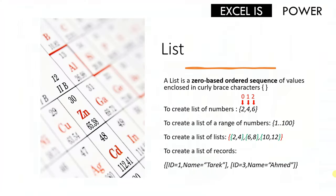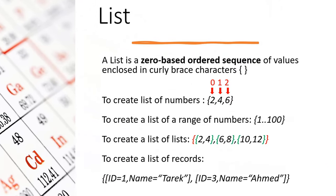So what is a list? A list is a zero-based ordered sequence of values enclosed in curly brackets. This means that if you want to form or create a list, you need to use curly braces. It is zero-based, meaning that if you look at the first example — a list of three numbers: two, four, and six — the position of the first number (two) is zero, not one. The position of four is one and the position of six is two.